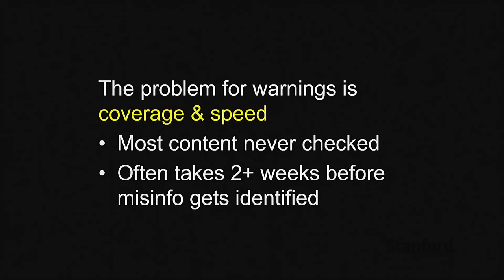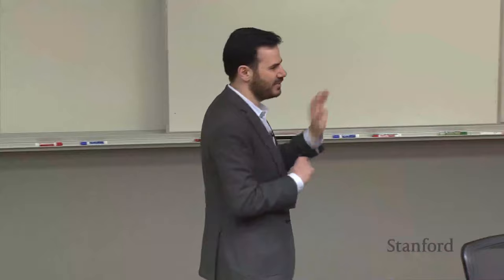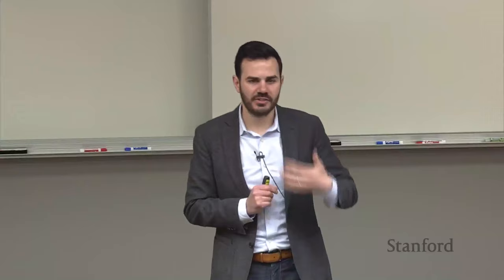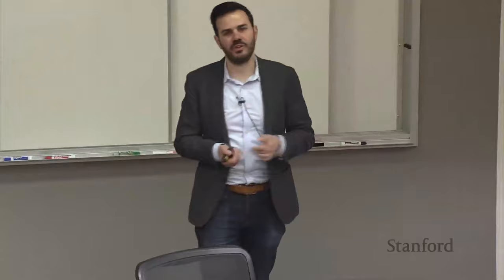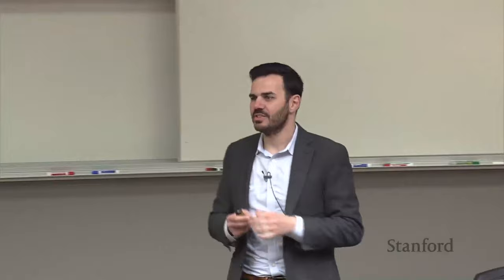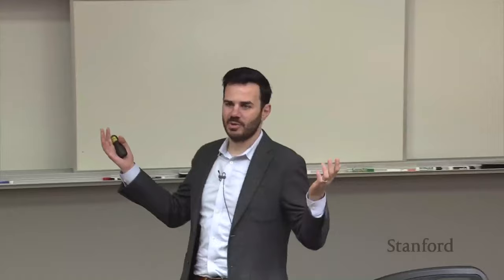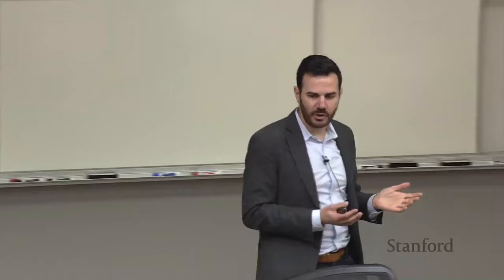Warning labels and demotion work, but the problem with these content-specific interventions — where you identify a piece of content as problematic and then act against it — is coverage and speed. There's so much content online that professional fact-checkers can't check everything. When things do get evaluated, it's often slow. A stat Facebook put out was something like an average of two days between when something is posted and when it's flagged. If something gets identified and demoted but it's already been up for days, that's not going to do anything because basically everybody who was going to see it has already seen it.